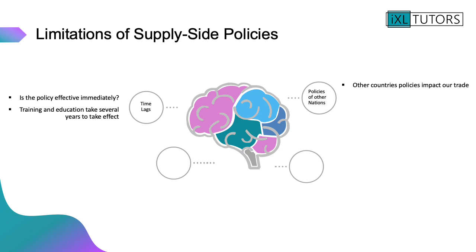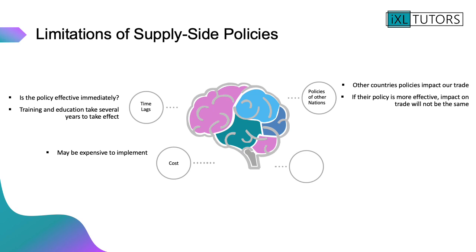The second limitation is to consider the impact of our policies on other nations. Other countries' policies impact our trade, and if their policy is more effective, the impact on trade will not necessarily be the same. You have to think about the implications of other countries' policies.